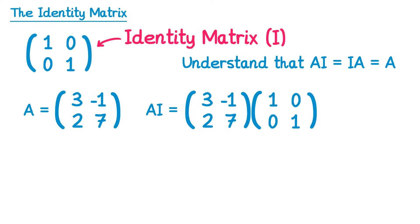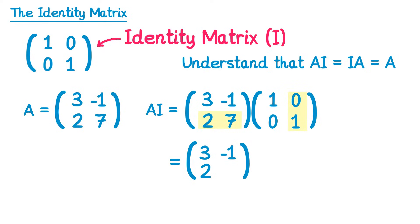If we do this multiplication: three, negative one with one, zero — that's three times one is three, and negative one times zero is zero, giving three. Then three, negative one with zero, one — three times zero is zero, negative one times one is negative one, giving negative one. Then two, seven with one, zero — two times one is two, seven times zero is zero, giving two. And finally two, seven with zero, one — two times zero is zero, seven times one is seven. Notice that the result is just our original matrix A. So whenever you do A times the identity, you get A back.